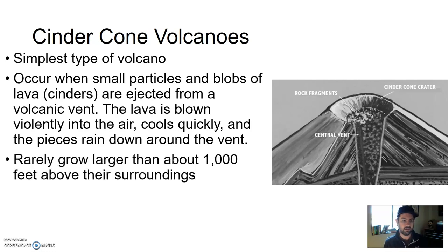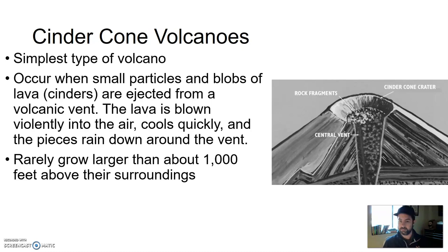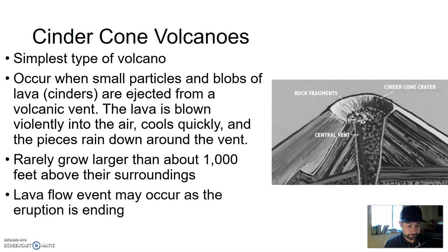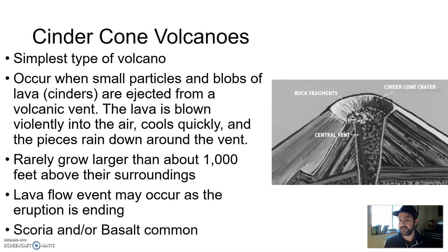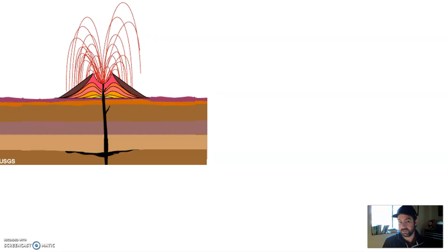They rarely grow larger than about a thousand feet or so above their surroundings. So it's a lot of gas and a lot of little particles being shot out — that's a cinder cone volcano. A lot of little spittle just being shot out, cooling very quickly, falling right around the vent, forming these very loose cinder-based little volcanic vents, hence cinder cone. Types of igneous rocks common around cinder cones are scoria and/or basalt — mostly extrusive igneous rocks in the mafic realm.